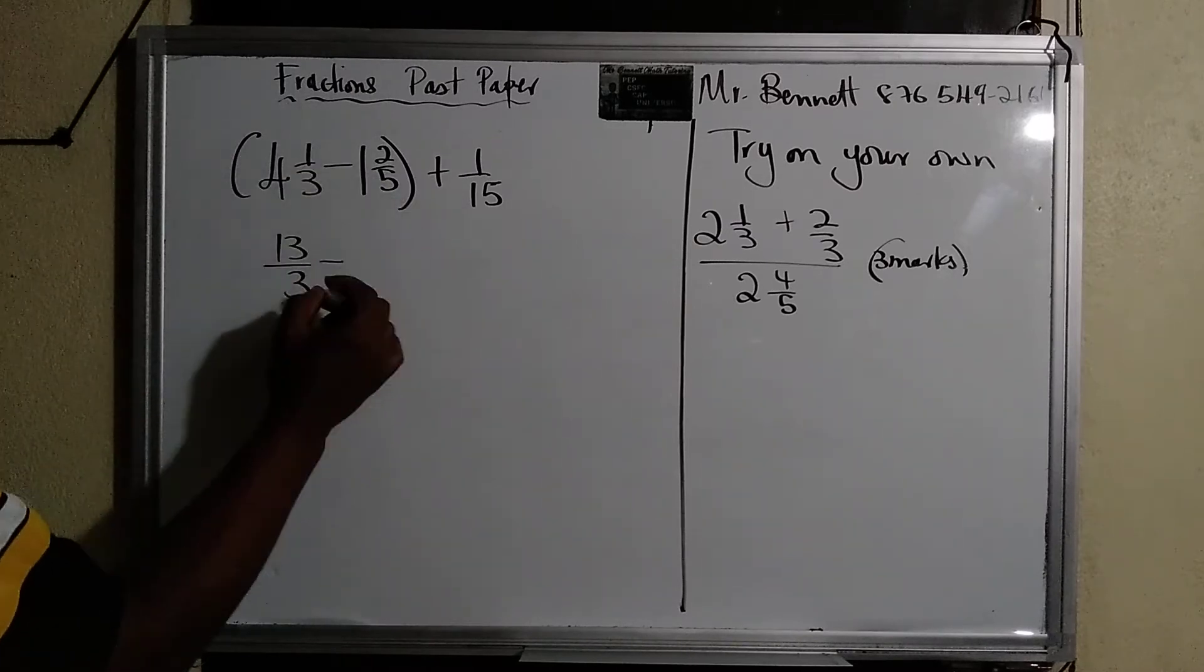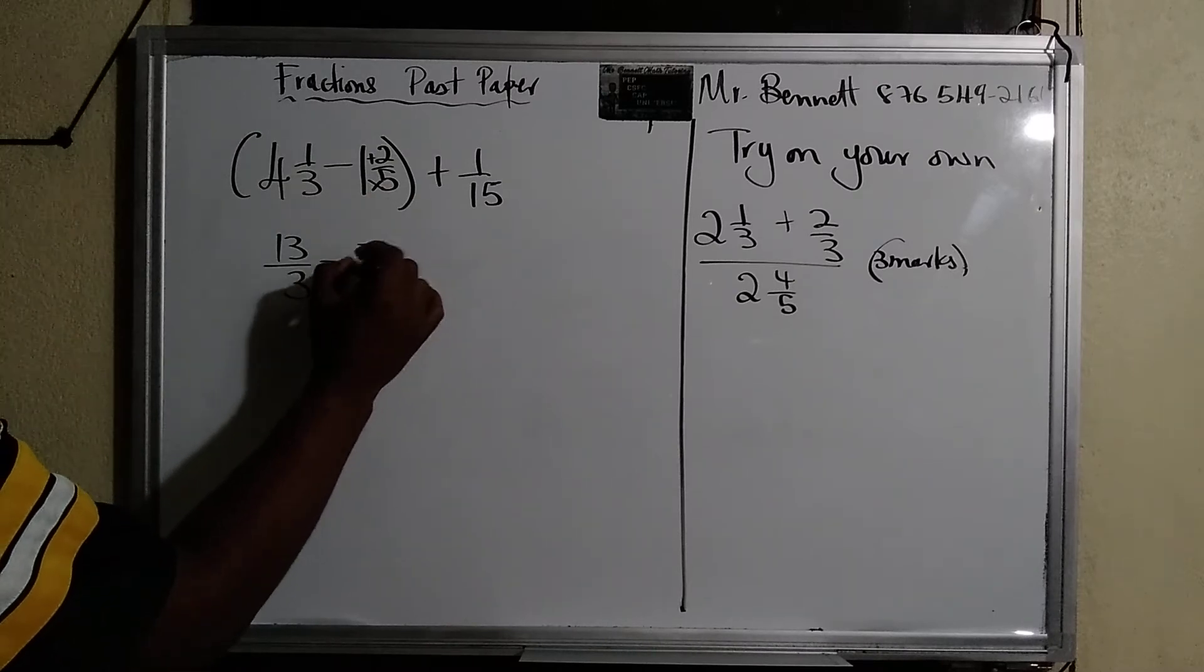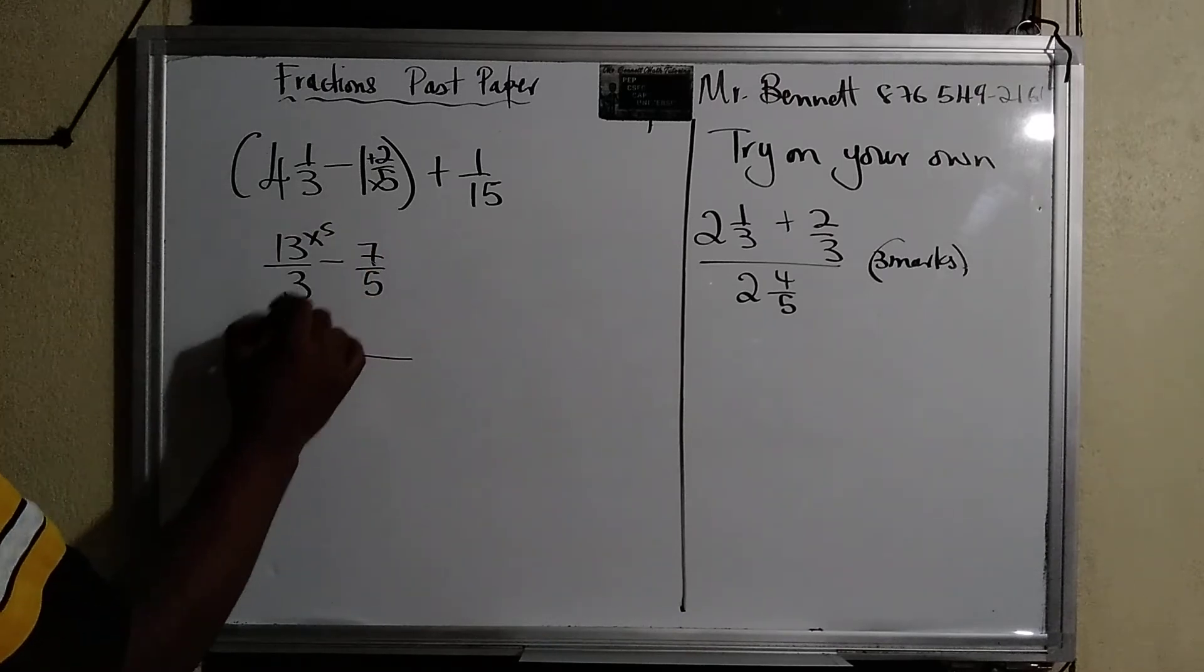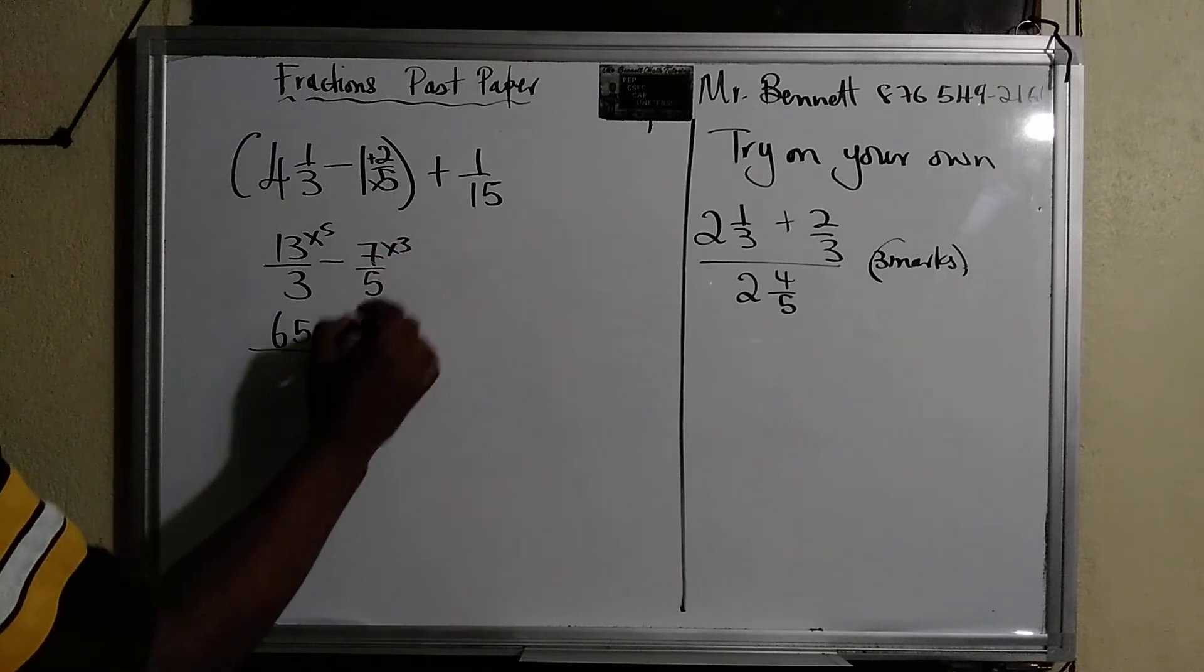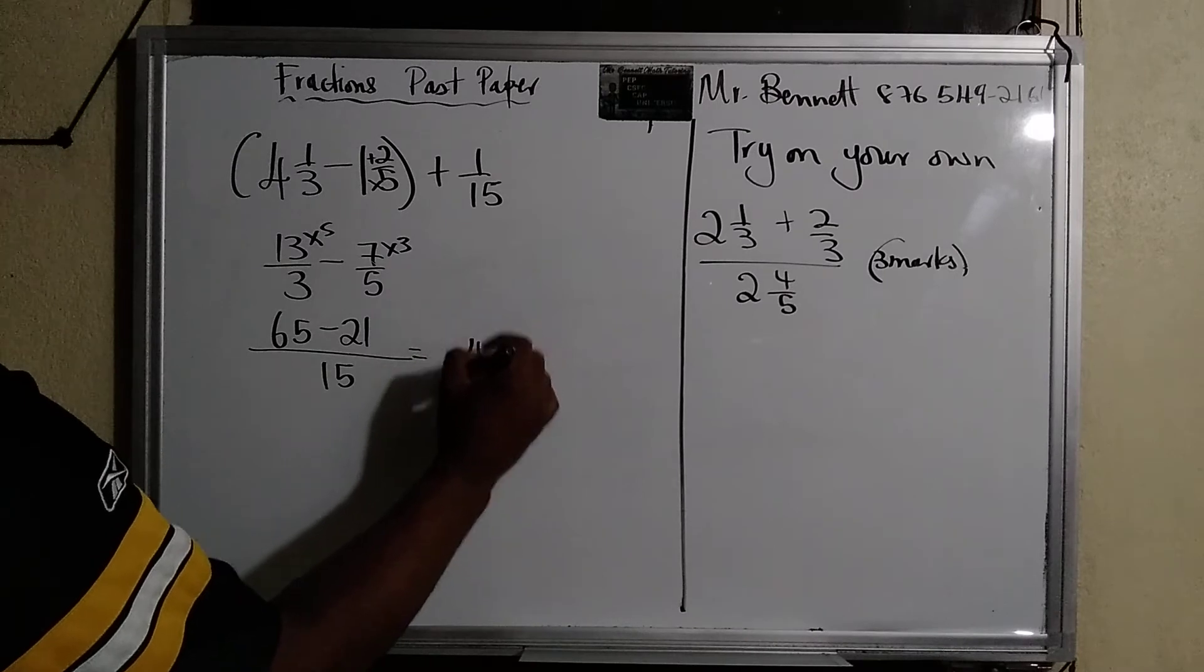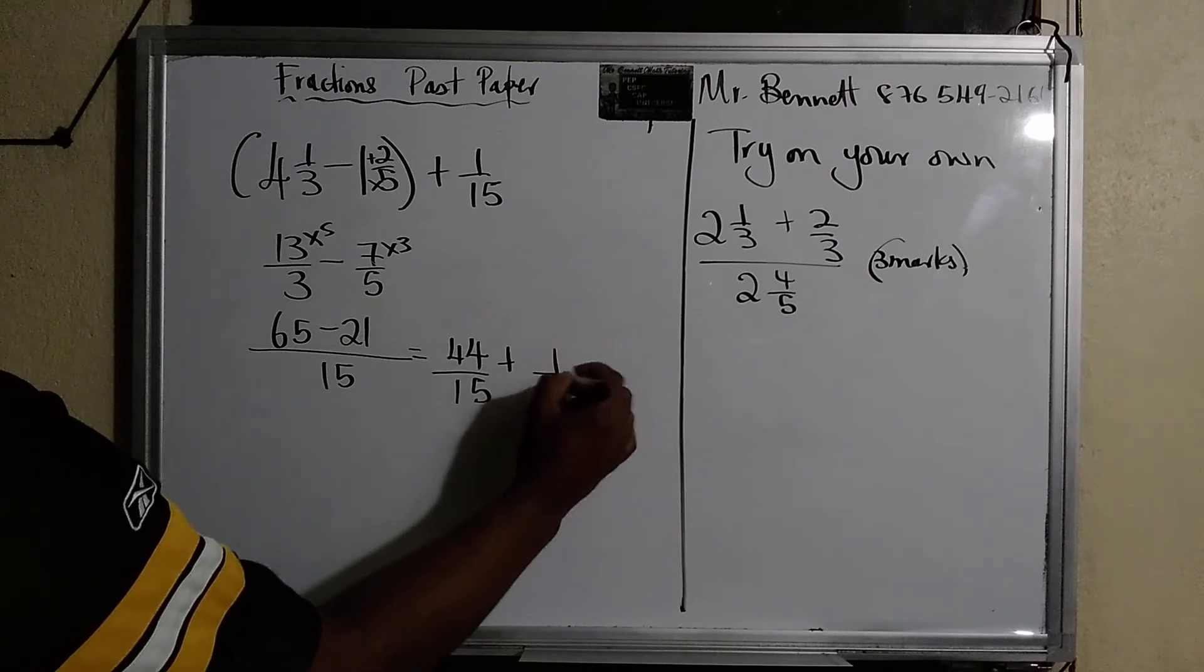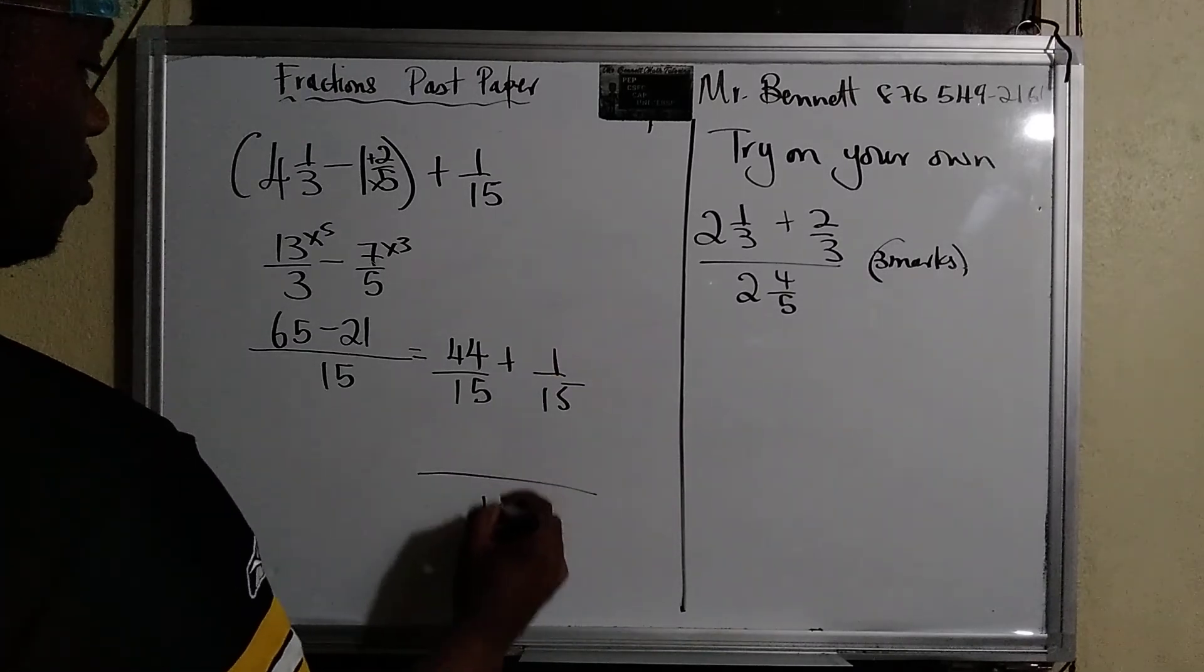So four times three is twelve and one is thirteen over three. By now everyone should be comfortable. One times five plus two is seven over five. Find the LCM, which is fifteen. Three into fifteen goes five. Five times this will be sixty-five. Five into this three, three times seven is twenty-one. We subtract: one from that leaves four, two from that leaves four, so we get forty-four over fifteen plus one over fifteen.